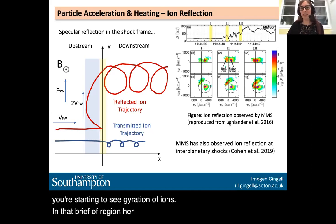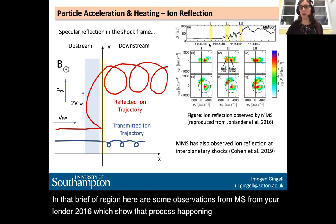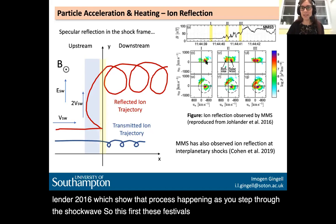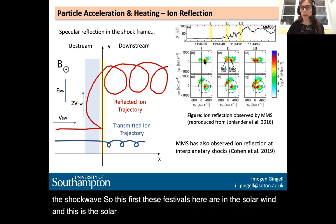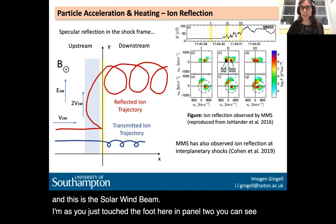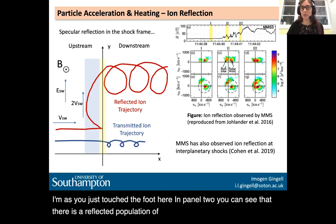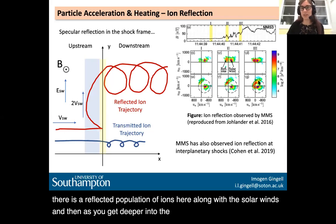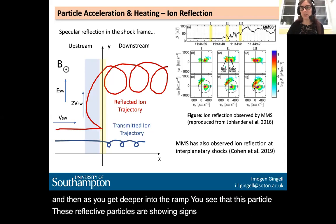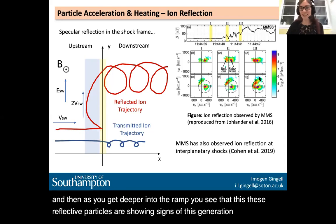Here are observations from MMS by Johlander et al. 2016, showing that process happening as you step through the shock wave. In the solar wind you see the solar wind beam; as you just touch the foot, you can see a reflected population of ions along with the solar wind. Getting deeper into the ramp, you see these reflected particles showing signs of gyration as they move around — consistent with that single-energy gyration signature. Recently, this reflection process has also been observed in interplanetary shocks, which had previously been quite difficult due to the time cadence required.